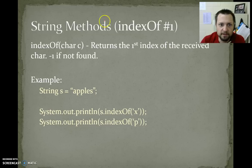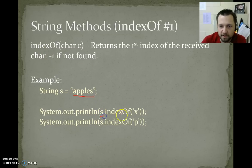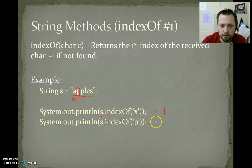indexOf — receives char c, returns the first index of the received char, negative 1 if not found. So we have "apples". If we do s.indexOf('x'), there is no X in there, so we get minus 1. s.indexOf('p') — the first P we find is at location 1. So this would return 1.